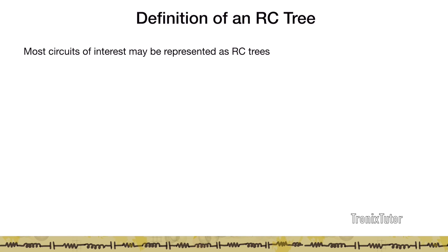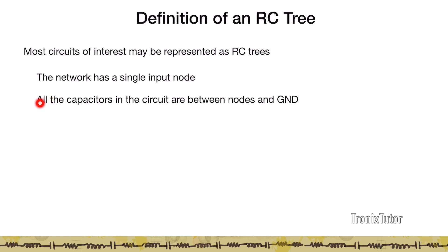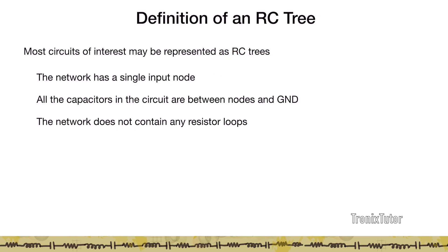Before formalizing the Elmore delay, let's discuss RC trees. The dominant pole approximation works very well for circuits that are RC trees. An RC tree has: (1) a single input aggressor node, (2) all capacitors connected between nodes and ground — no capacitor between two internal nodes, and (3) no resistor loops. Cascades of gates modeled with RC delay models naturally form RC trees, so this works very well for digital circuits.